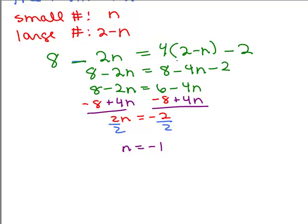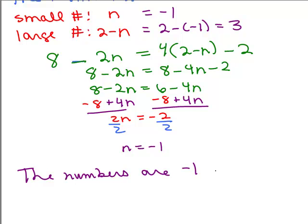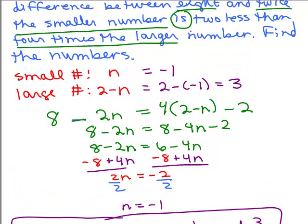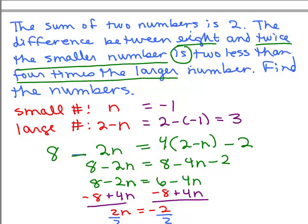Here are the steps in solving it: first, apply the distributive property to 4 times (2 minus n); then combine like terms on the right-hand side; then get the variables on the left and constants on the right by adding the appropriate terms to both sides; last step is to divide both sides by 2. For n, I got negative 1. So the smaller number n is negative 1, and the larger number is 2 minus negative 1, which is 3. The numbers are negative 1 and 3. To check, go back and verify that the difference between 8 and twice the smaller is really 2 less than 4 times the larger.